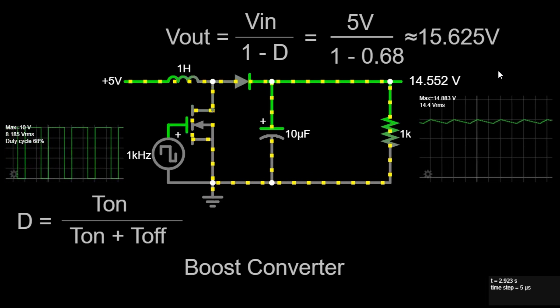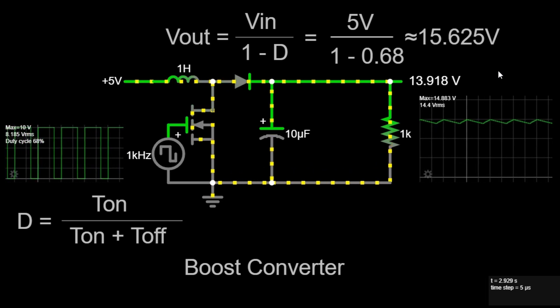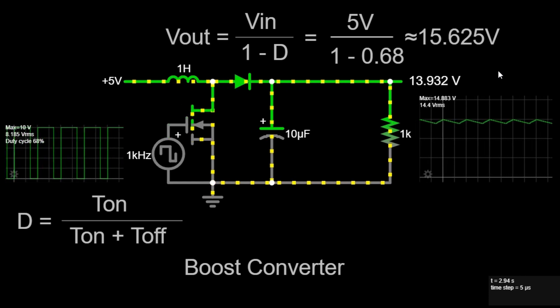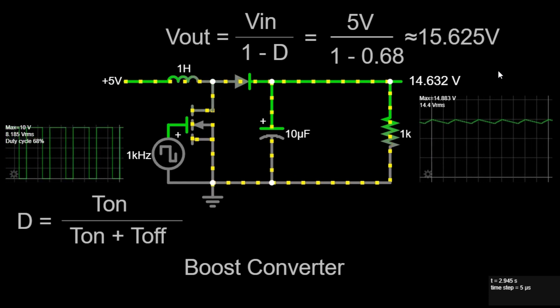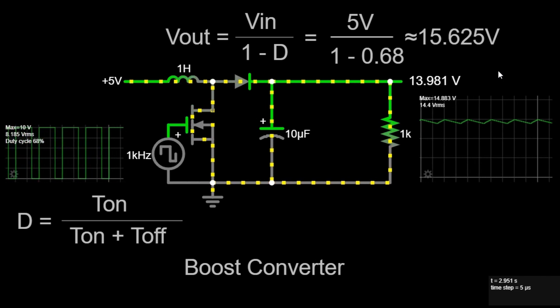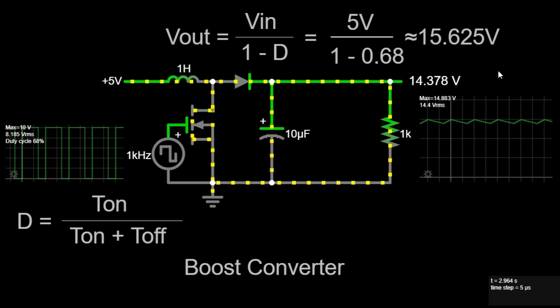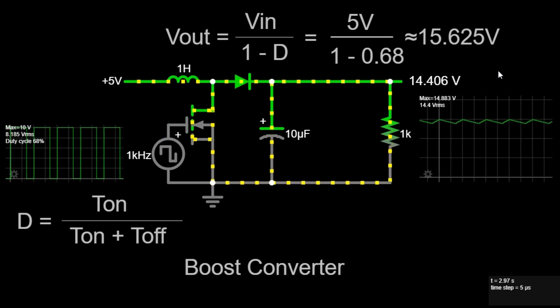When designing or analyzing a boost converter, several practical aspects should be considered. First, Inductor Selection: The value of the inductor affects the current ripple. A larger inductor reduces the ripple but may increase the physical size. The choice of inductor should balance size, cost, and performance requirements.